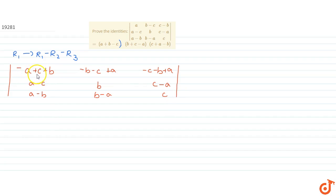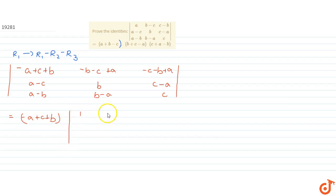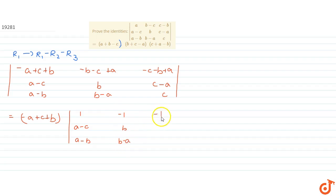Taking out the common term -(a-b-c) from row 1, we get: row 1 becomes 1, (a-c), (a-b); row 2 is -1, b, (b-a); and row 3 is -1, (c-a), c.